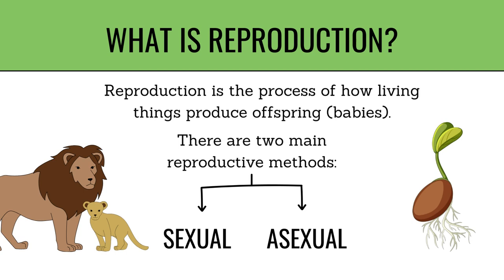Now let's discuss reproduction. It is the process of how living things produce offspring, like babies. There are two main reproductive methods: sexual and asexual.